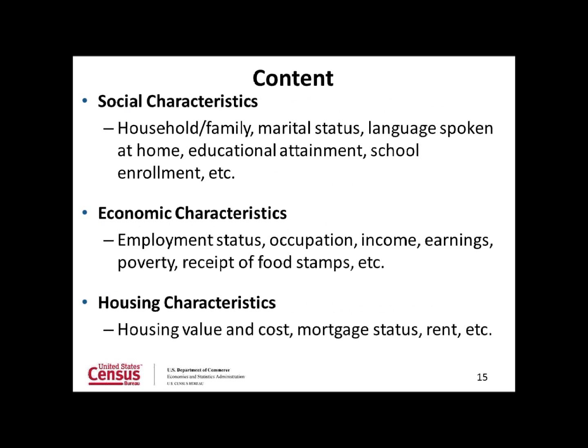The new ACS data products ensure coverage of all major topics. These include important social characteristics such as household, family, marital status, language spoken at home, educational attainment, and school enrollment; economic characteristics such as employment status, occupation, income, earnings, poverty, and receipt of food stamps; and housing characteristics such as housing value and cost, mortgage status, and rent.